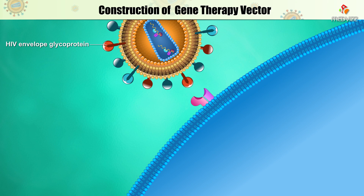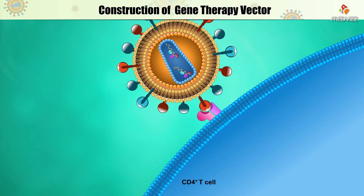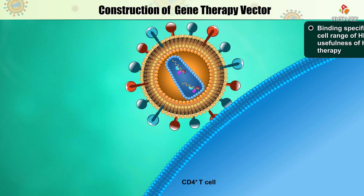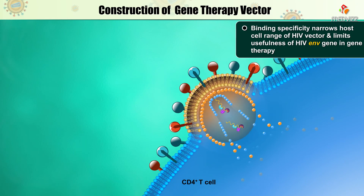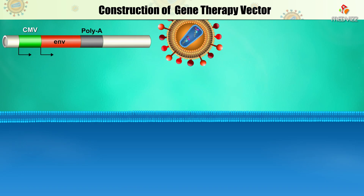The HIV envelope glycoprotein targets HIV to specific cells in the body. The envelope glycoproteins bind to receptor proteins on CD4+ T cells of the immune system, and in doing so initiate infection. This binding specificity narrows the host cell range of HIV vectors and limits the usefulness of the HIV env gene in gene therapy.